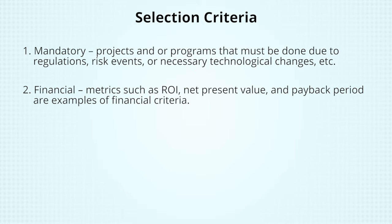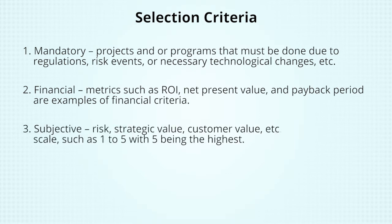Two, financial. Metrics such as ROI, net present value, and payback period are examples of financial criteria. Three, subjective. Risk, strategic value, and customer value are all examples of subjective criteria. They are graded on a scale, such as one to five, with five being the highest.